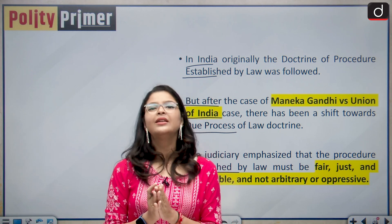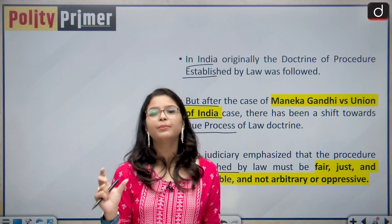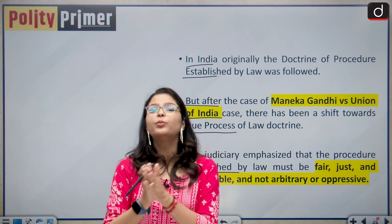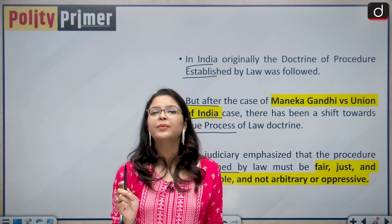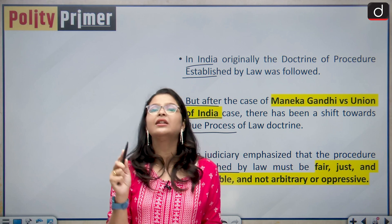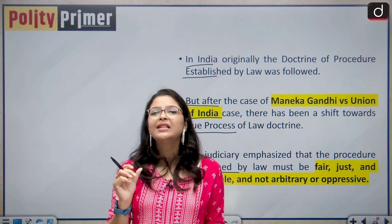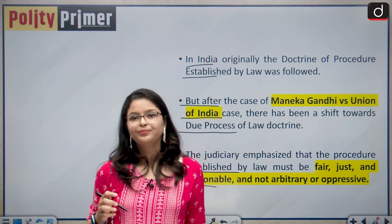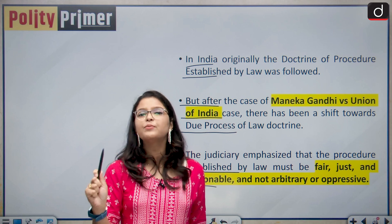In due process of law, the court can run behind the intention of Parliament to make a law, but this does not happen in the case of procedure established by law. Due process of law has a wider scope than procedure established by law. In due process, the court can examine whether the law is valid and just. But in procedure established by law, the court only sees whether the procedure has been strictly followed.